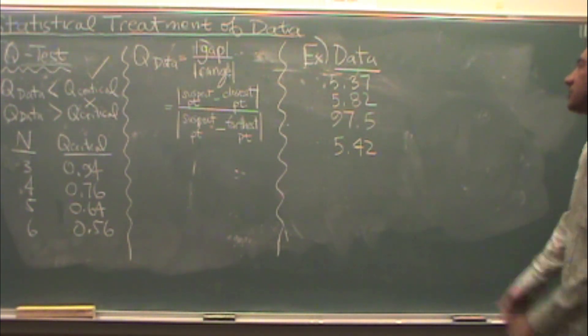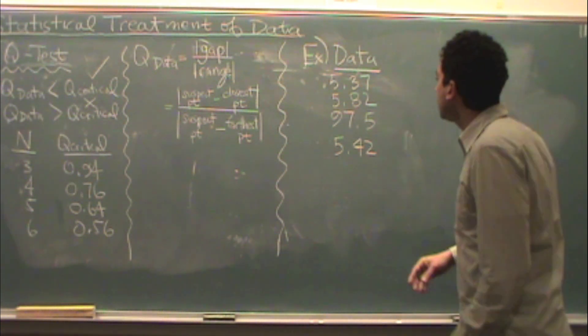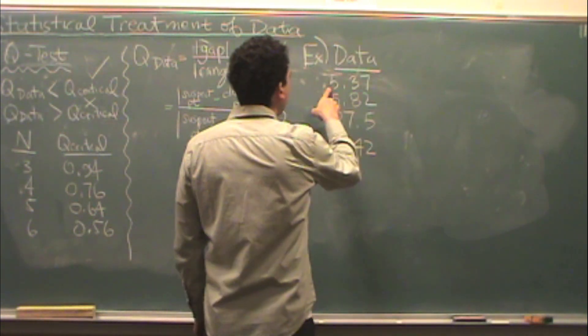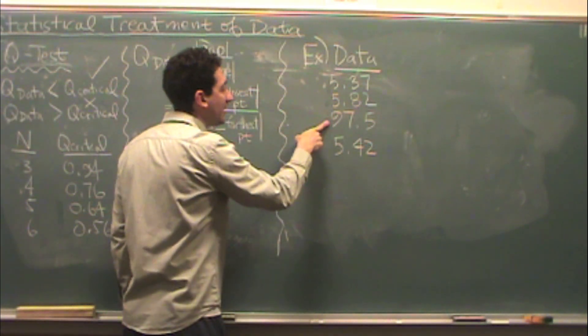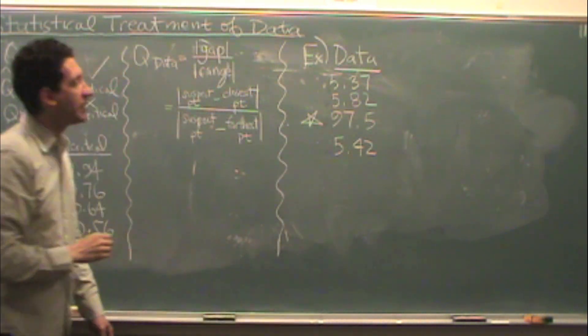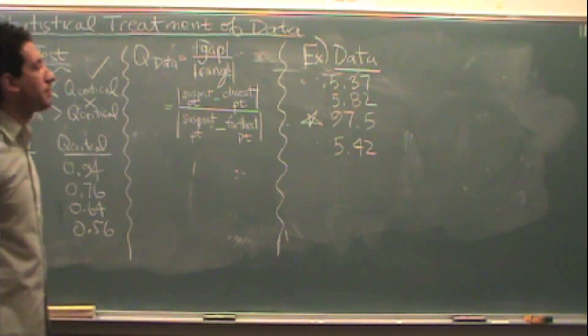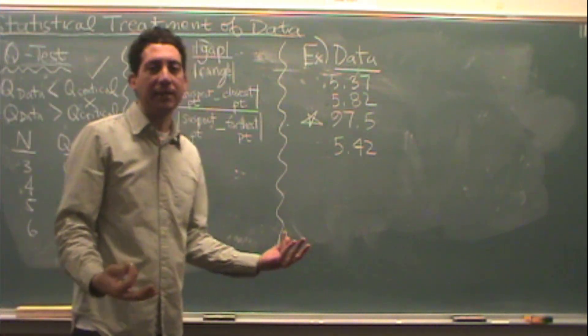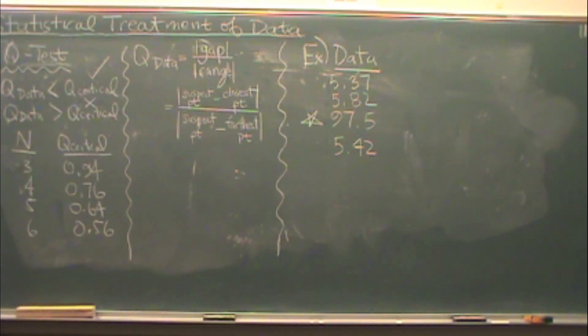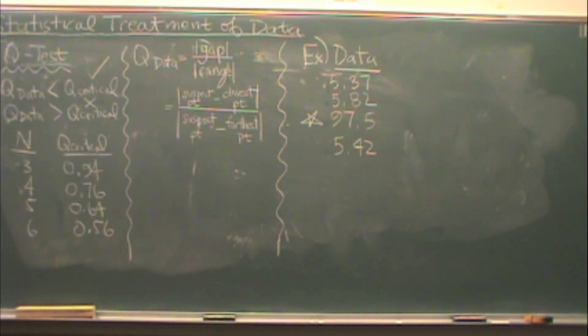So let's look at actual data and you're going to see it's actually a pretty easy test to do. We're looking at this data: 5.37, 5.82, 97.5, and 5.42. Wait a minute - that third one looks unusual. I suspect it to be poor data. Something happened when I was collecting the data that just wasn't right. Probably my lab partner.